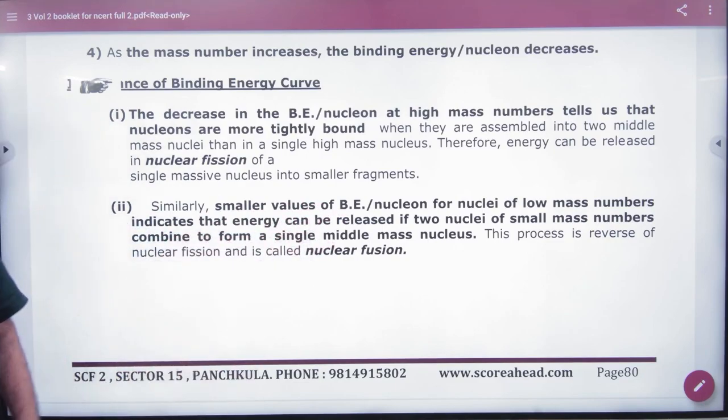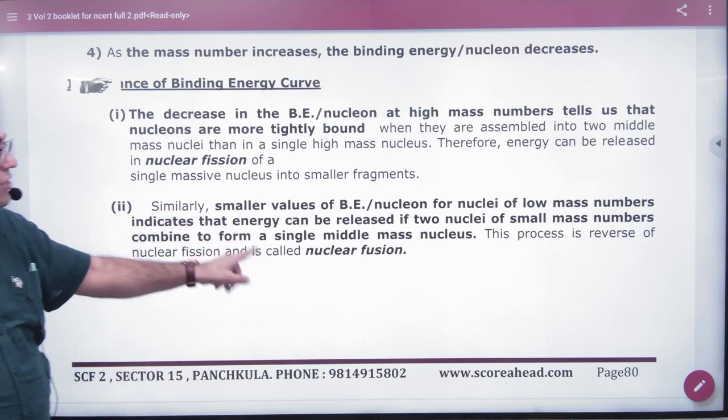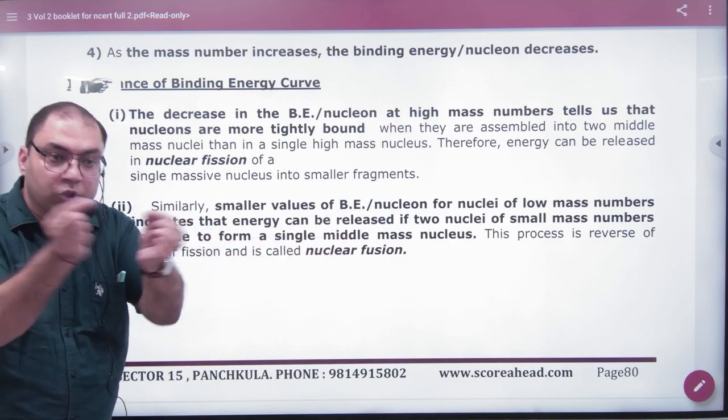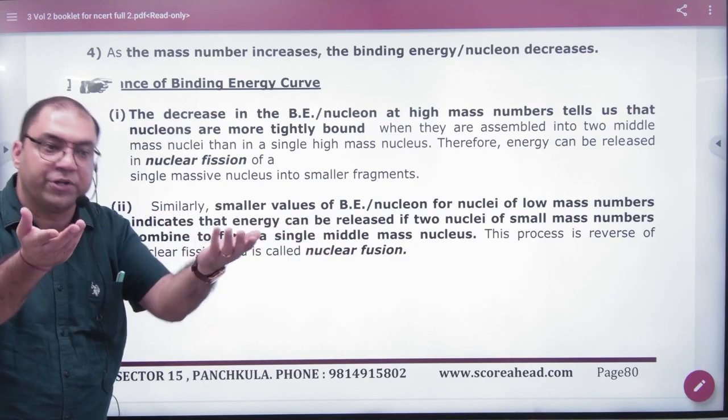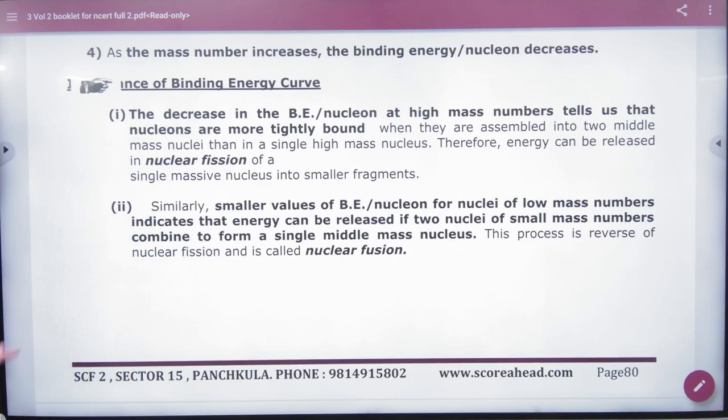Smaller value of binding energy per nucleon for nuclei of lower mass number means the binding energy per nucleon is less. If you have two small nuclei, they will become a big nucleus. This is called nuclear fusion. The reason is that the binding energy per nucleon's value is less for the small nuclei.